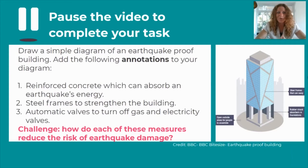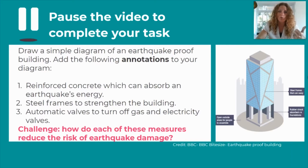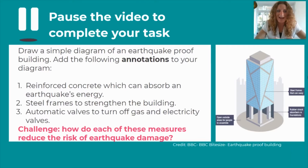I'd like you to draw a diagram of an earthquake-proof building — there's a simple one on screen for you to copy. We're going to focus on the three things we've just talked about: reinforced concrete, steel frames, and automatic valves. Annotate your diagram with: reinforced concrete which can absorb an earthquake's energy; steel frames to strengthen the building; automatic valves to turn off gas and electricity.